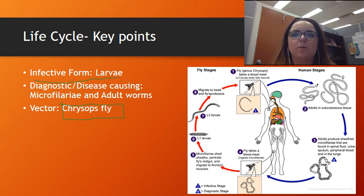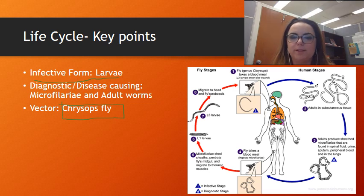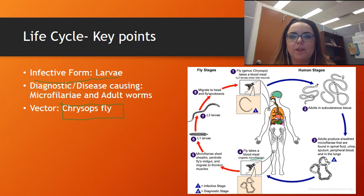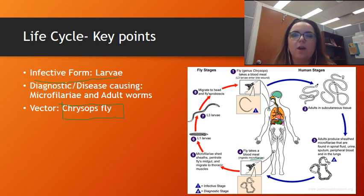When an uninfected chrysops then takes a blood meal from this same person, it picks up some of the microfilariae, which then develop into an infection within that chrysops fly's salivary gland, and the cycle begins all over again.